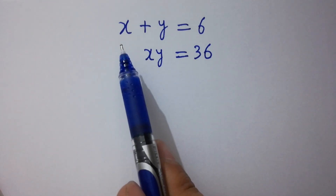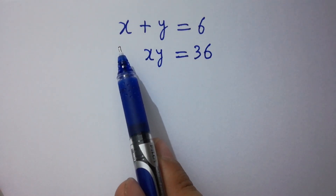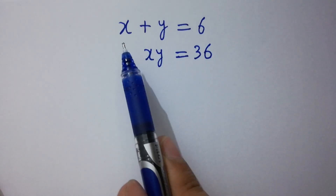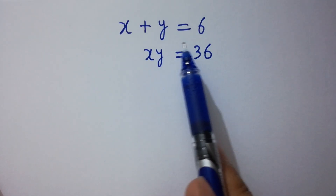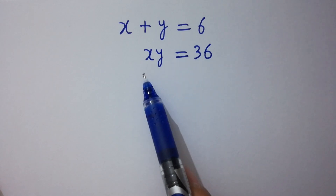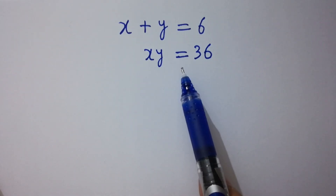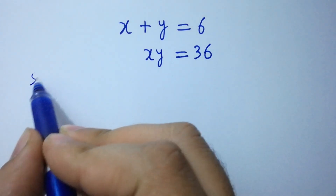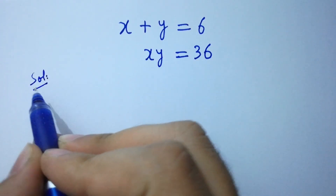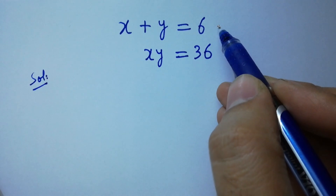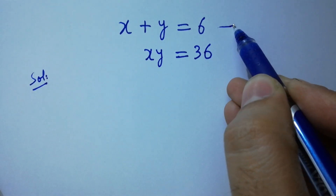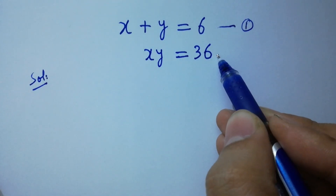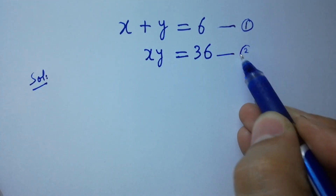Hello friends. How to solve for x and y in this problem, where x plus y equals 6 and x times y equals 36. Let's have a solution. To solve this, let x plus y equals 6 be the first equation and x times y equals 36 be the second equation.